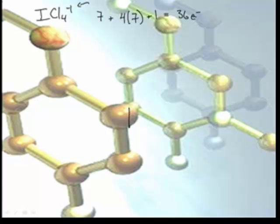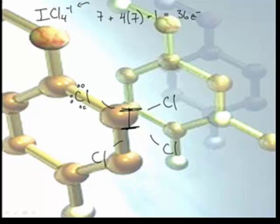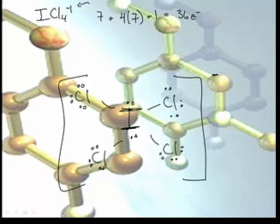I got thirty-six electrons to spend. So the central atom will be iodine and I've got four chlorines. I got four more. You got to stick them in the middle. And since it's an ion, we put a bracket around it and we put a negative one charge in this case.